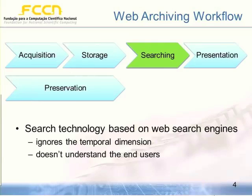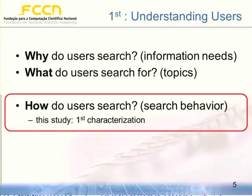First, it ignores the temporal dimension. And second, it doesn't understand the end users. So in this study, we try to understand how users search — this is the first characterization of this kind. In the previous study, we tried to understand why users search: what motivates them, what leads them to start searching, and what topics were more interesting to them.